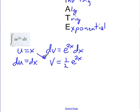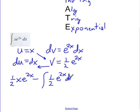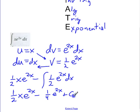The antiderivative of e to the 2x is going to be one-half e to the 2x. So I'm going to do u times v minus the integral of v du. u times v is one-half x e to the 2x, minus the integral of v du. We can integrate that now, so my final answer is one-half x e to the 2x minus one-fourth e to the 2x plus c.